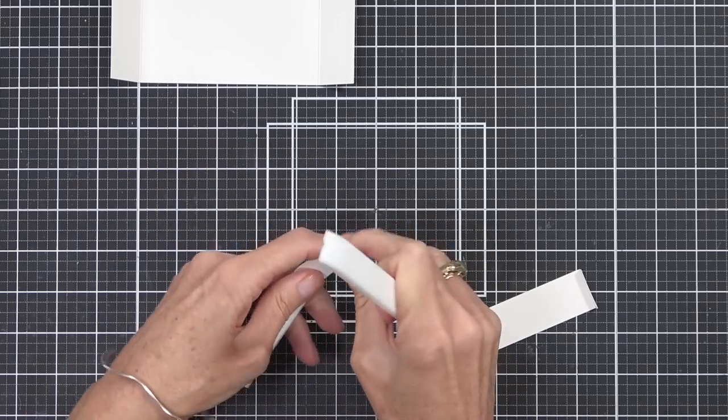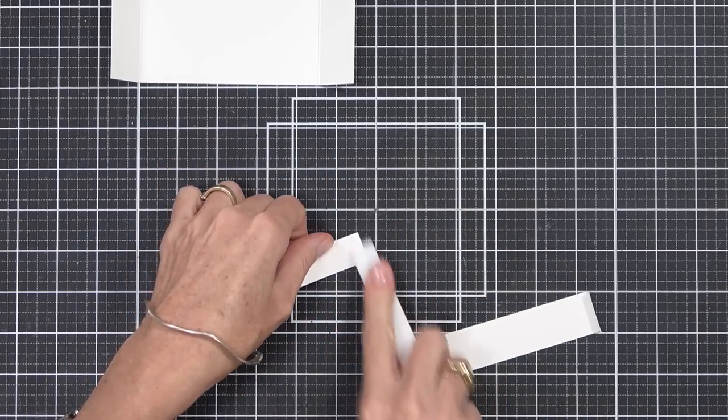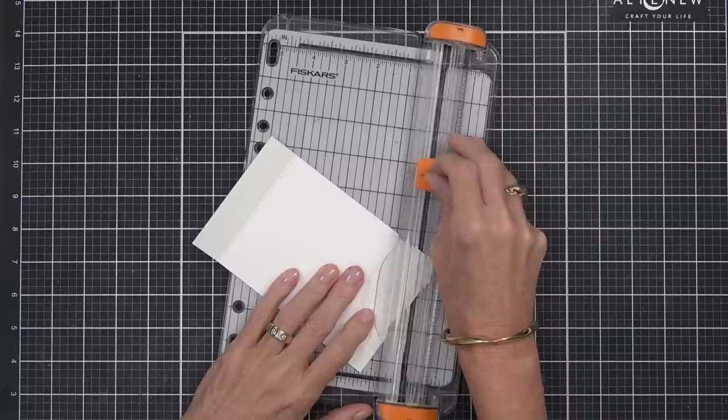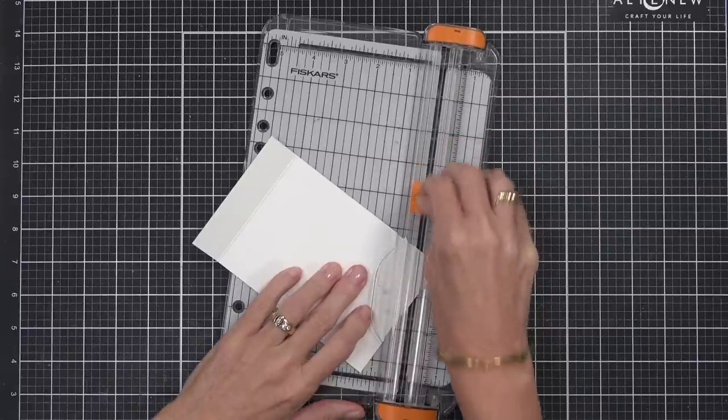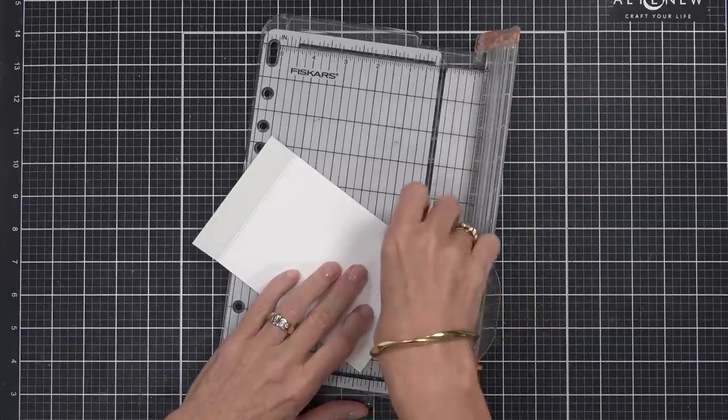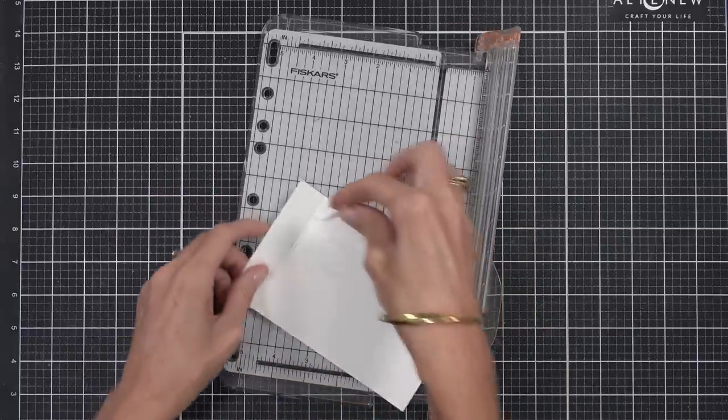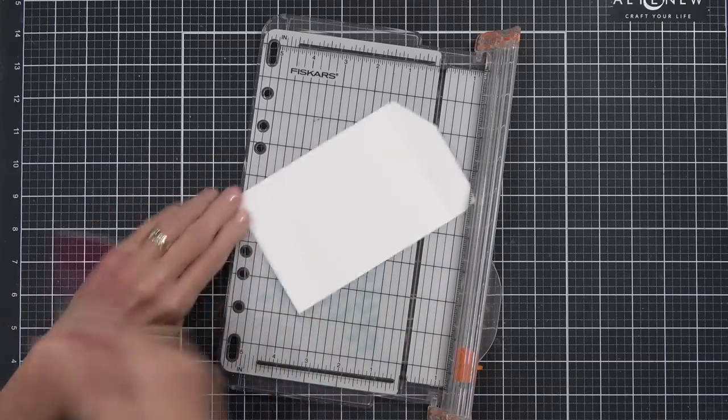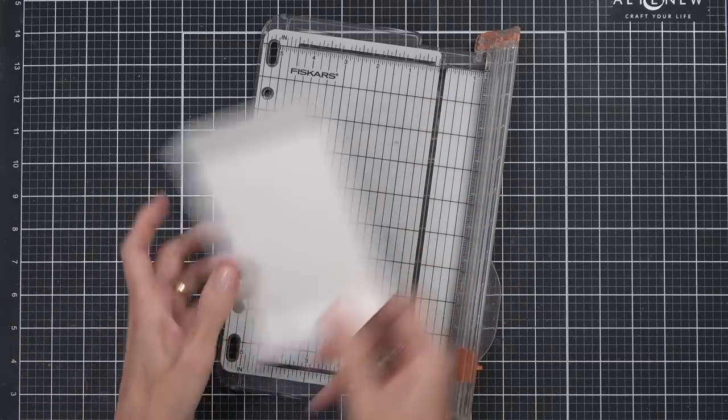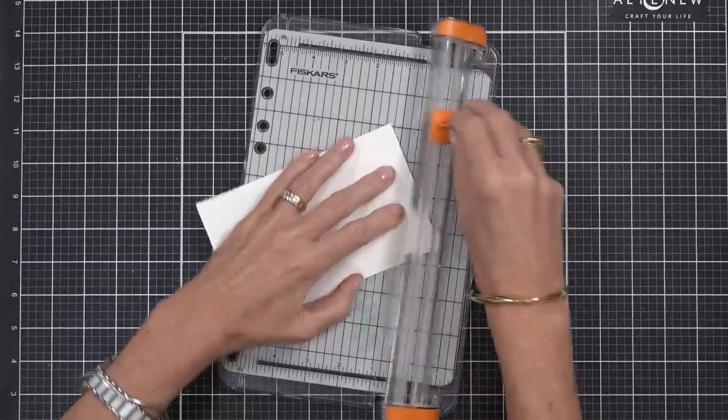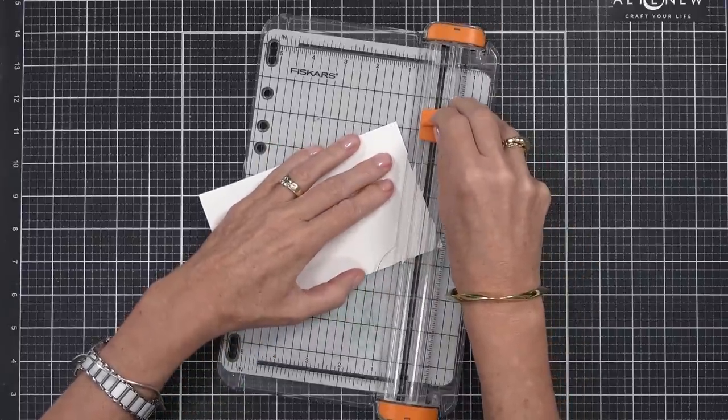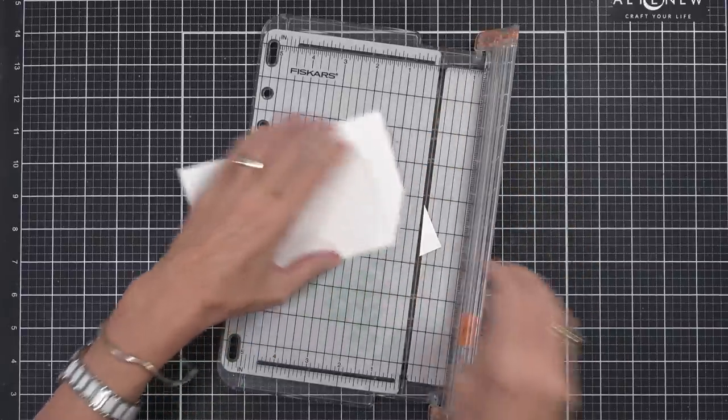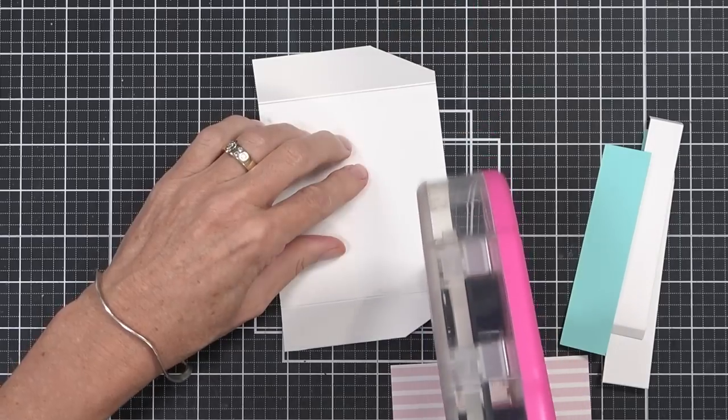Now this is totally optional. I decided to cut a triangle off each of the corners of the card just to add a little bit of a decorative edge. If you had like a punch, an edge punch, you could even do it with one of those to add a bit of a pattern if you wanted to.